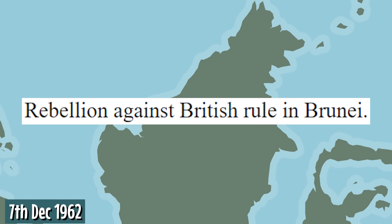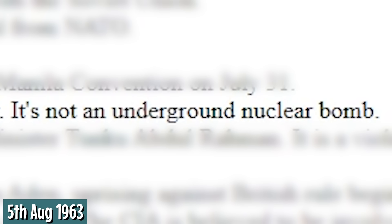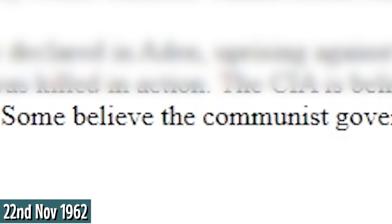December 7th: rebellion against British rule in Brunei. This match will be the first match between Indonesia and Malaysia. On August 5th, Great Britain and the Soviet Union signed the Pacific Treaty — it's not an underground nuclear bomb, it's not. Trust me on this. Nudge, nudge, wink, wink. November 22nd: John F. Kennedy is injured and dies in Dallas. Some believe the communist government or the CIA is responsible, but they still need treatment.